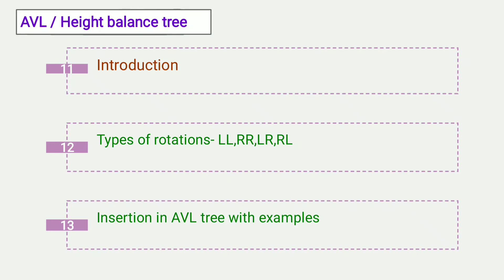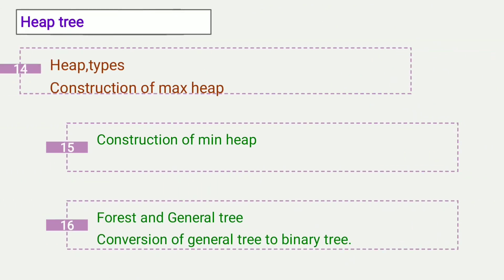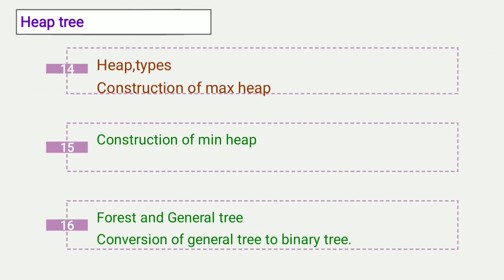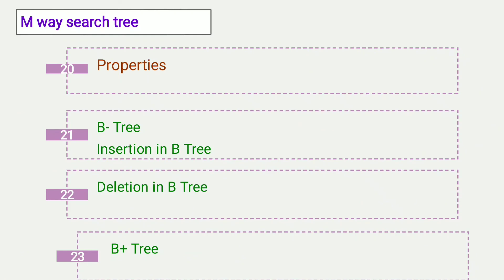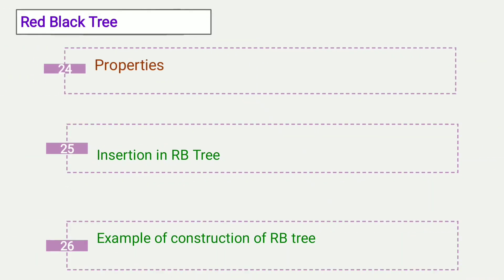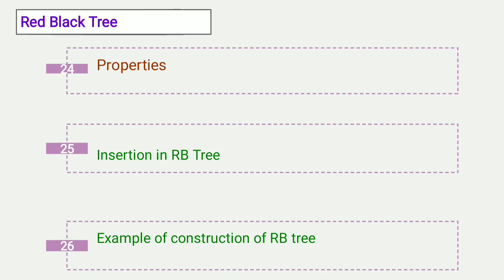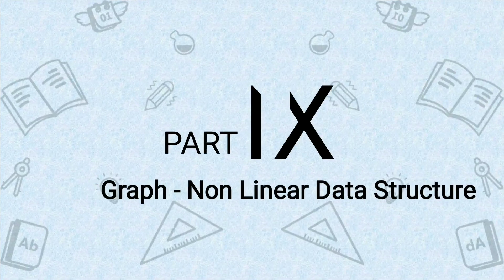Then we will study threaded binary tree and AVL or height-balanced tree, including types of rotations required in AVL tree: LL, RR, LR, and RL rotations, and insertion in AVL tree with examples. Next we will see heap tree — what is a heap, types of heaps, construction of max heap and min heap with example. Then forest and general tree, and how to convert a general tree to a binary tree. We will see applications of tree including Huffman fixed-length and variable-length encoding techniques. Then M-way search tree, B-tree and its properties, insertion and deletion in B-tree, B+ tree, red-black tree with properties, insertion, and construction example.